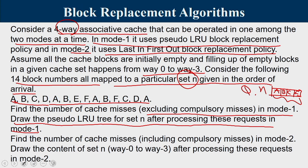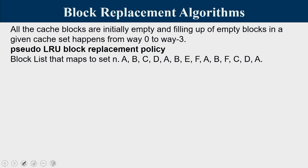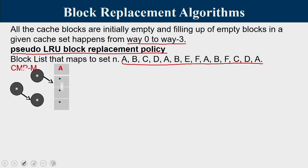Part 2: find the number of cache misses including compulsory misses in Mode 2 (LIFO), and draw the contents of set N (ways 0–3) after processing the requests. For a 4-way associative cache, pseudo-LRU uses a 3-node binary tree. After accessing a block, arrows point in the least recently used direction. Block A (first request, compulsory miss) is placed in way 0.